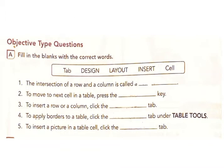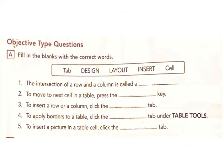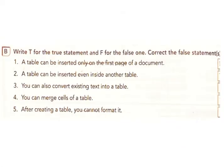3. To insert a row or a column, click the Layout tab. 4. To apply borders to a table, click the Design tab under Table Tools. 5. To insert a picture in a table cell, click the Insert tab.